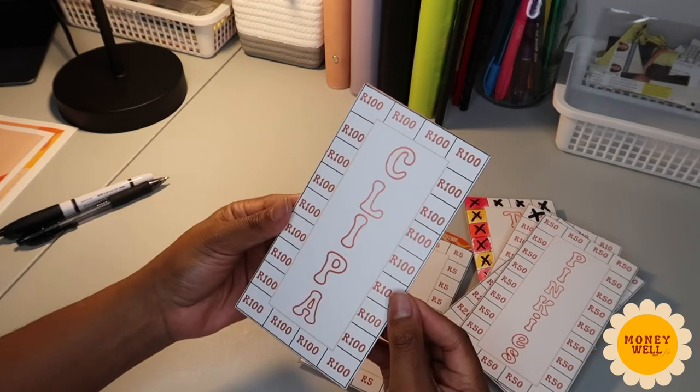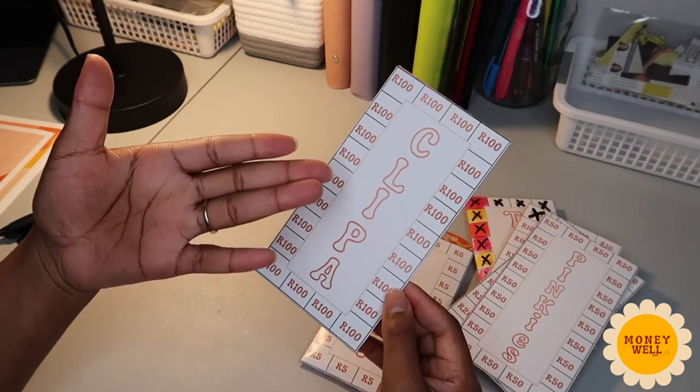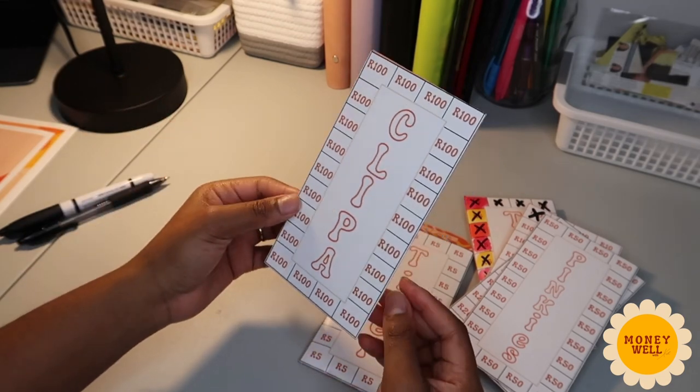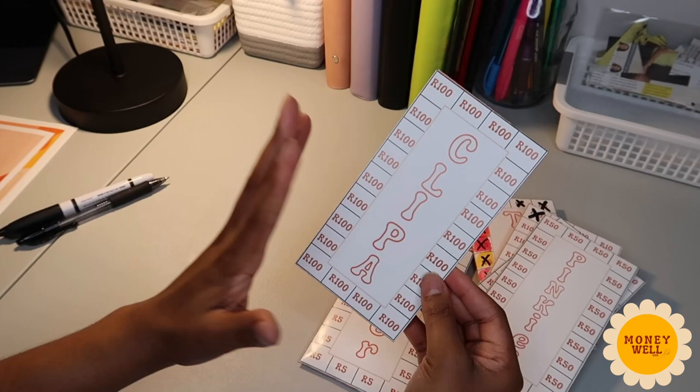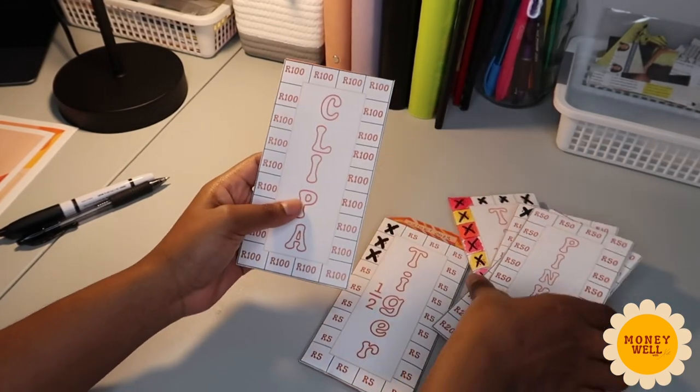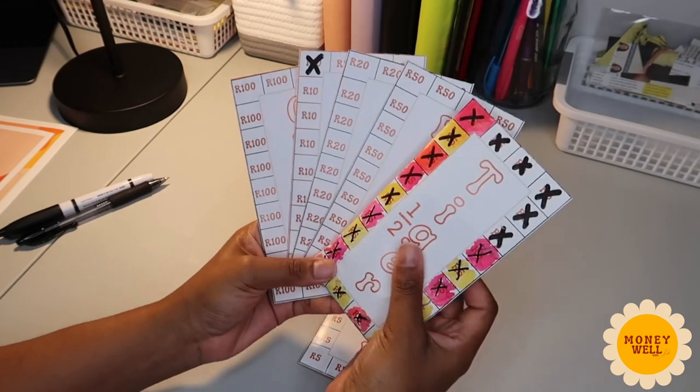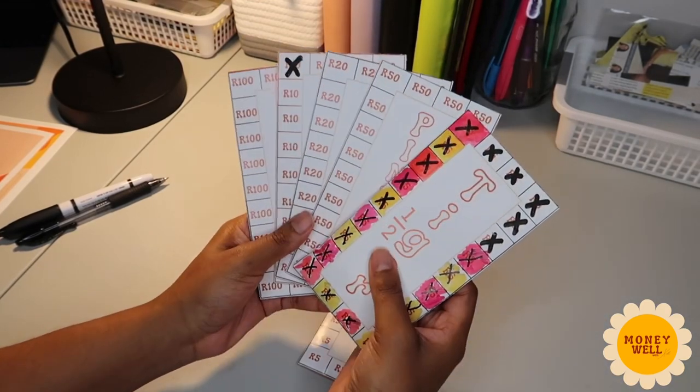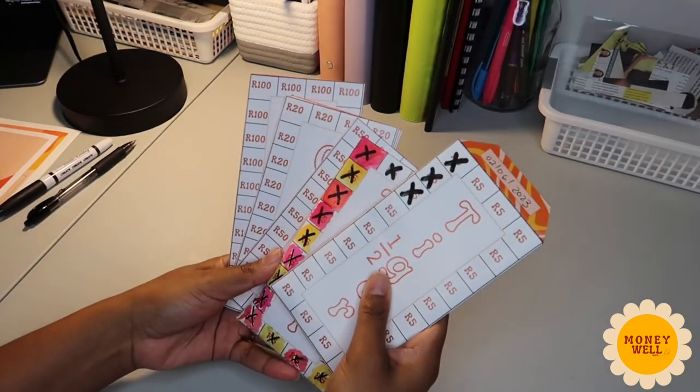And when I'm done with this challenge I will have 2200 rand. Now when you are done with the last envelope you bring out all your envelopes and then count how much you have saved in total. You should have 3900 rand.